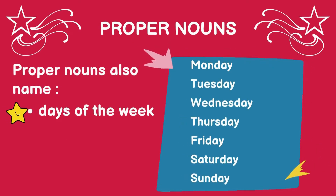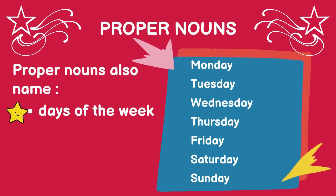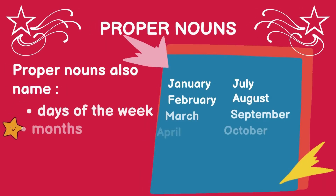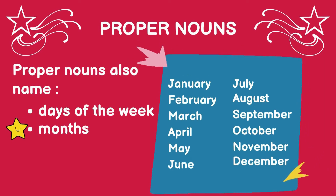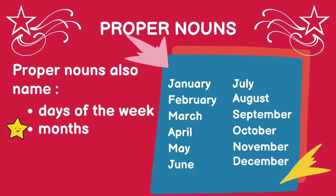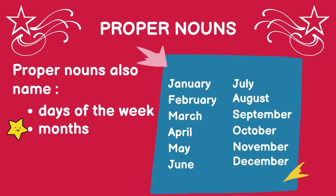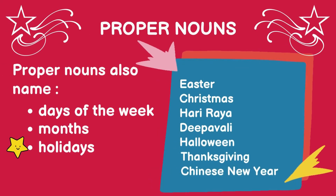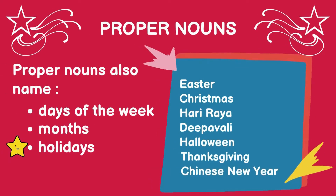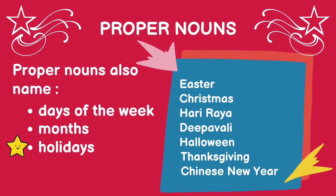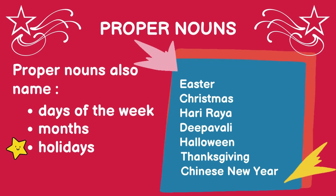Proper nouns can also name days of the week: Monday, Tuesday, Wednesday, Thursday, Friday, Saturday, and Sunday. Proper nouns also name months: January, February, March, April, May, June, July, August, September, October, November, and December. Proper nouns can also name holidays, for example Easter, Christmas, Hari Raya, Dipavali, Halloween, Thanksgiving, Chinese New Year, and much more.